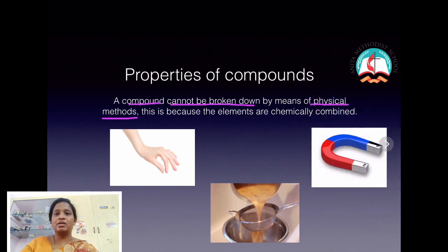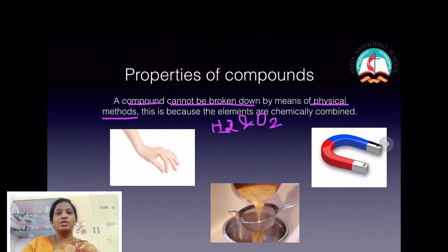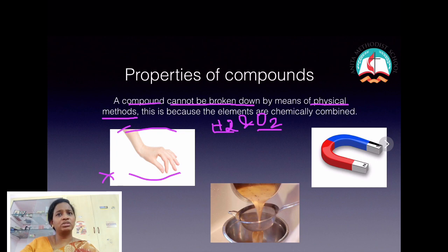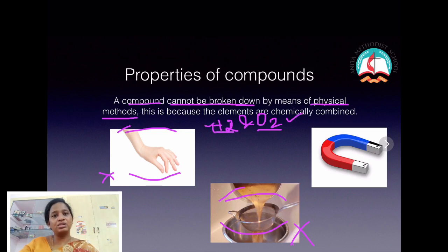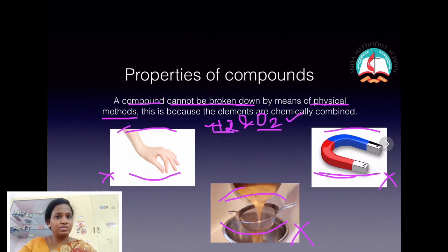Water is made up of two elements — hydrogen and oxygen. Can we separate hydrogen and oxygen from water using hand picking? No, it is not possible. Using filtration? No, also not possible. Using a magnet? No, also not possible. So physical methods cannot be used to separate the constituent elements from a compound.